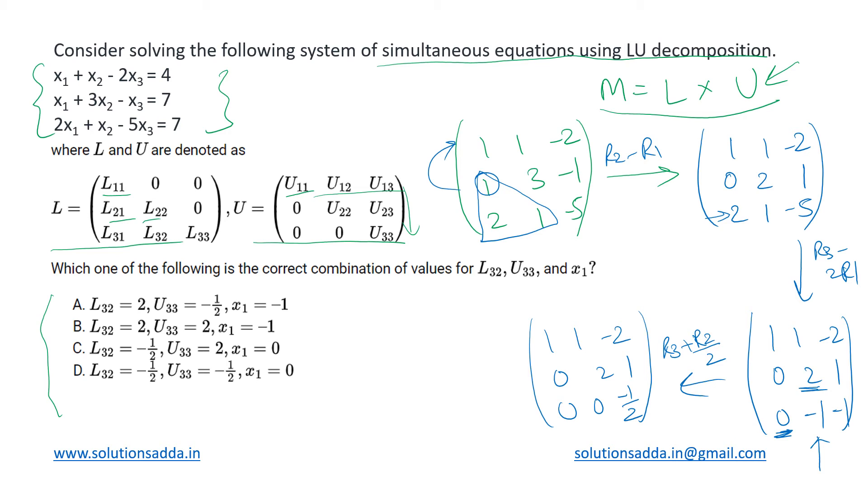So finally we got the upper triangular matrix U, and in the same way we can also calculate the lower triangular matrix L using the LU decomposition. So we get that the matrix L turns out to be 1, 0, 0; 1, 1, 0; and 2, -1/2, 1. This is our lower triangular matrix L.